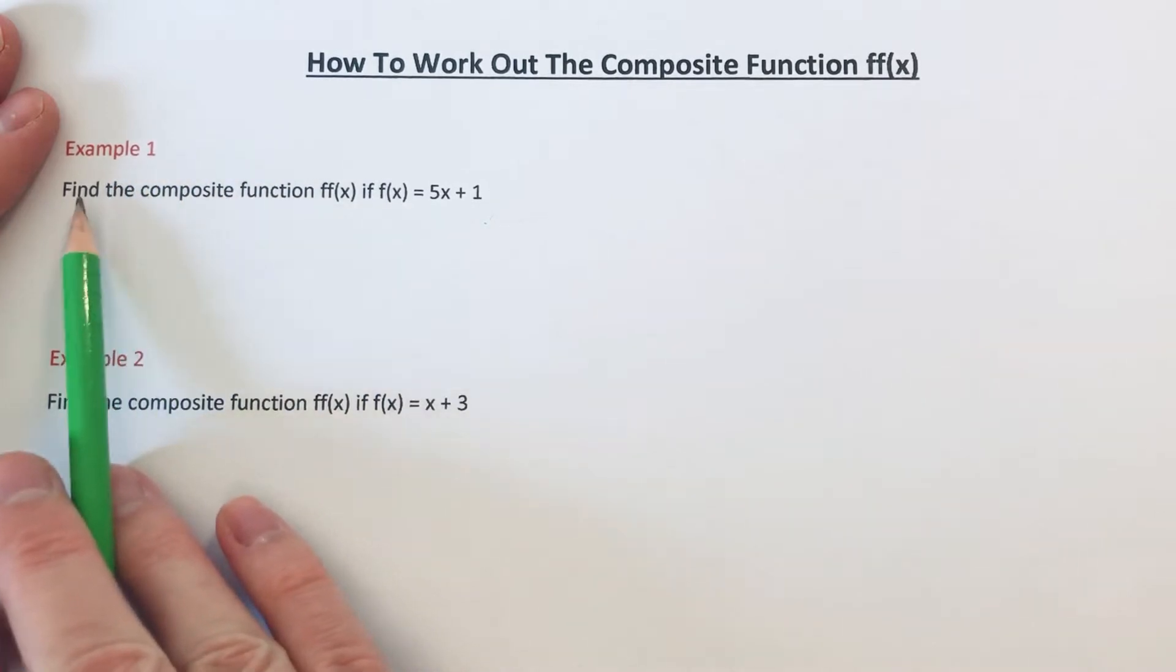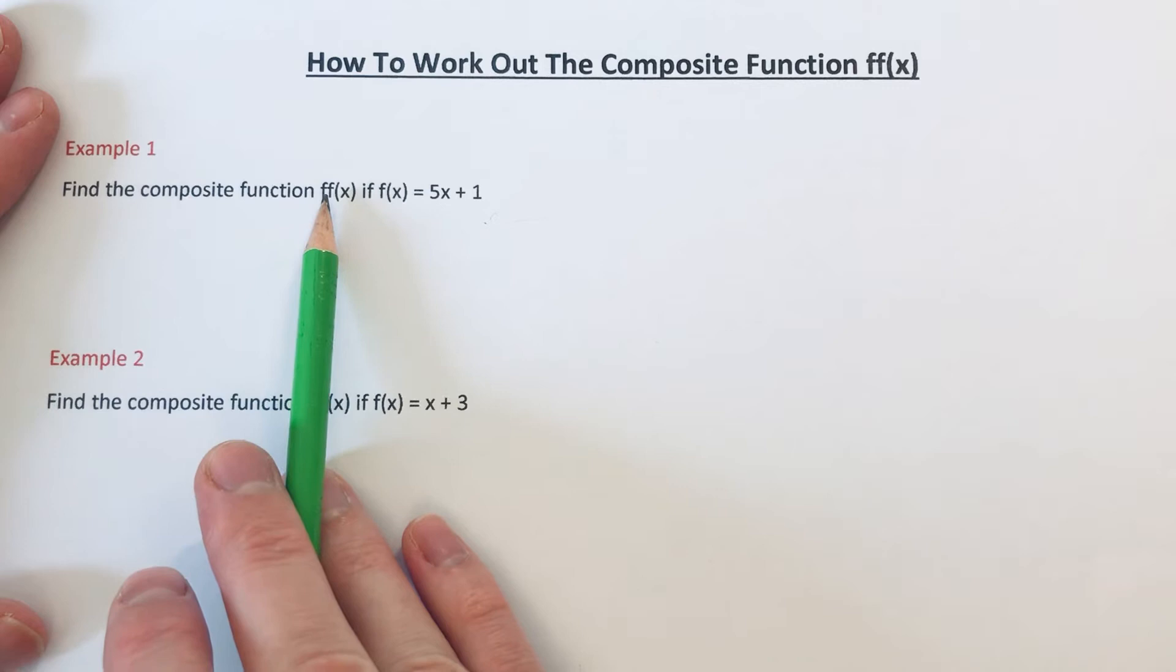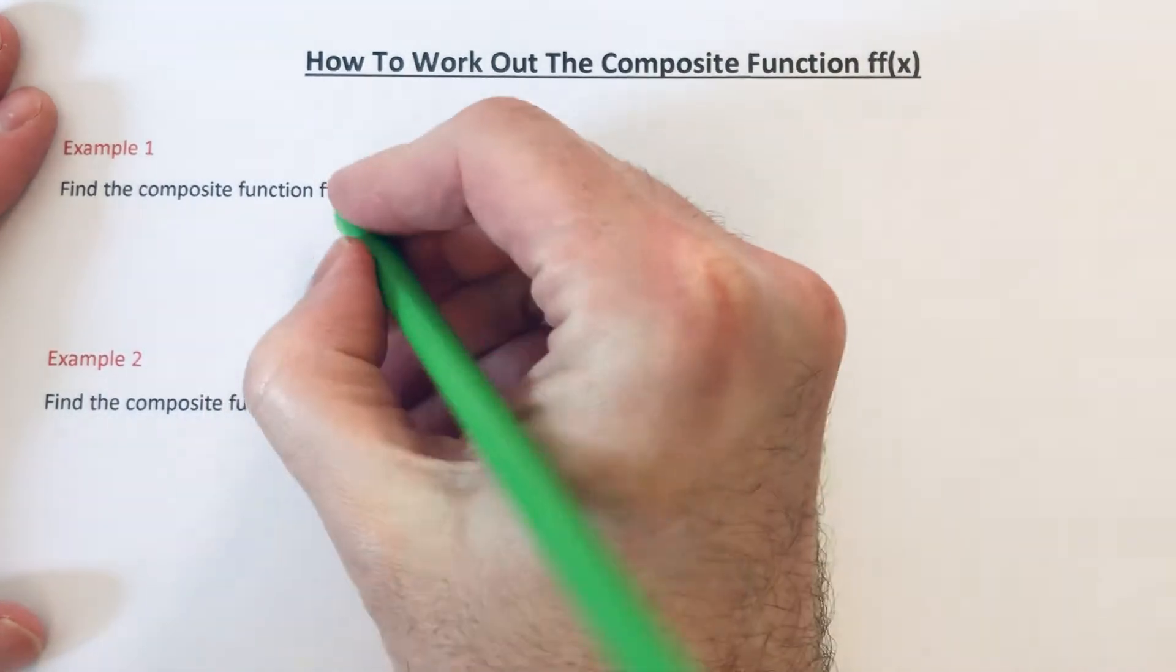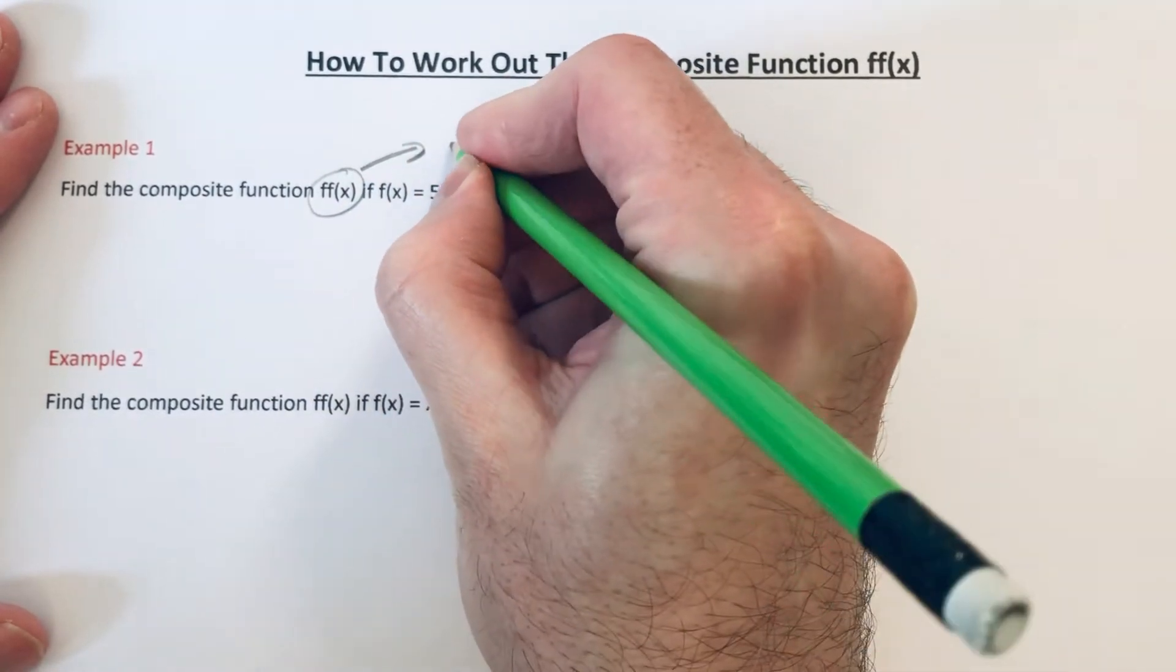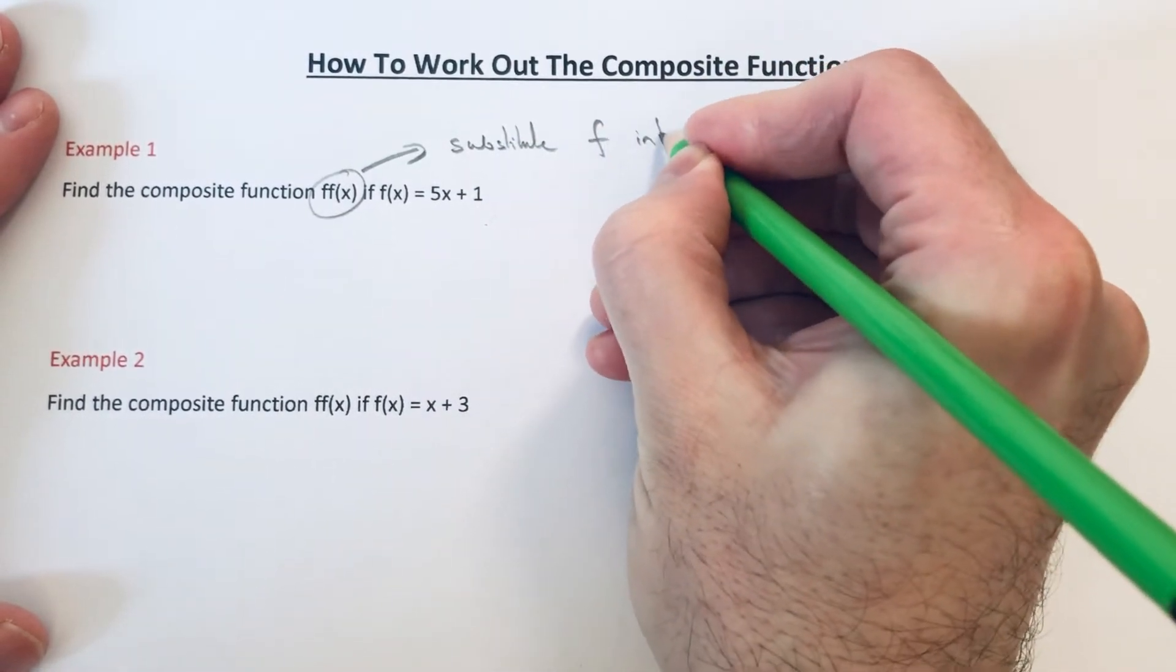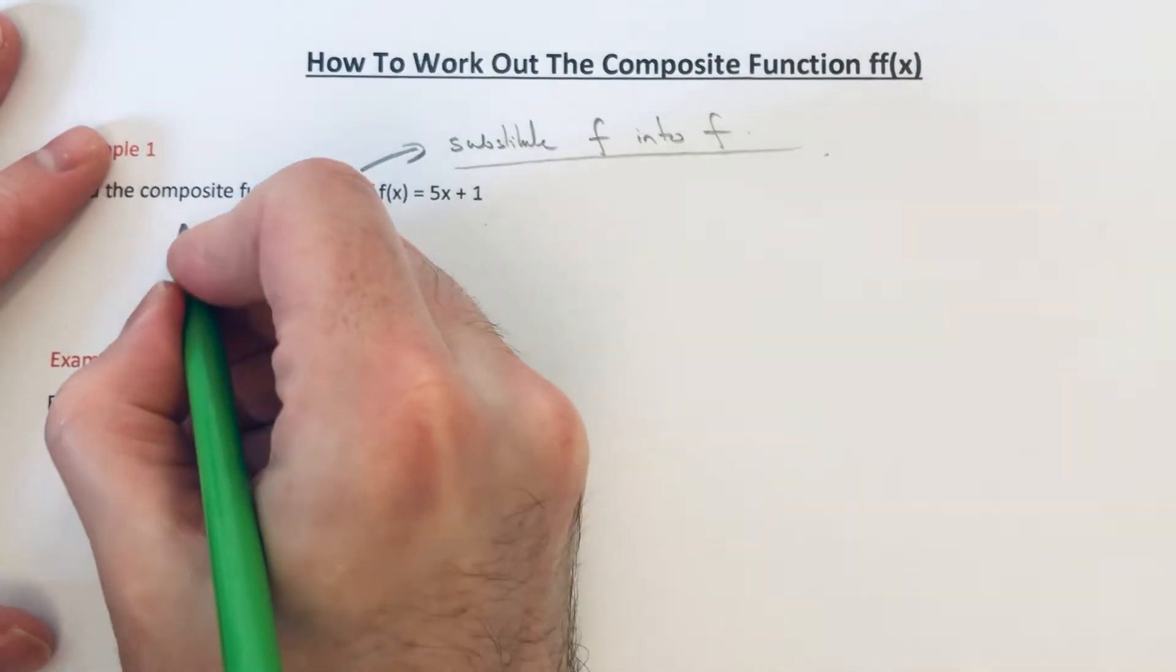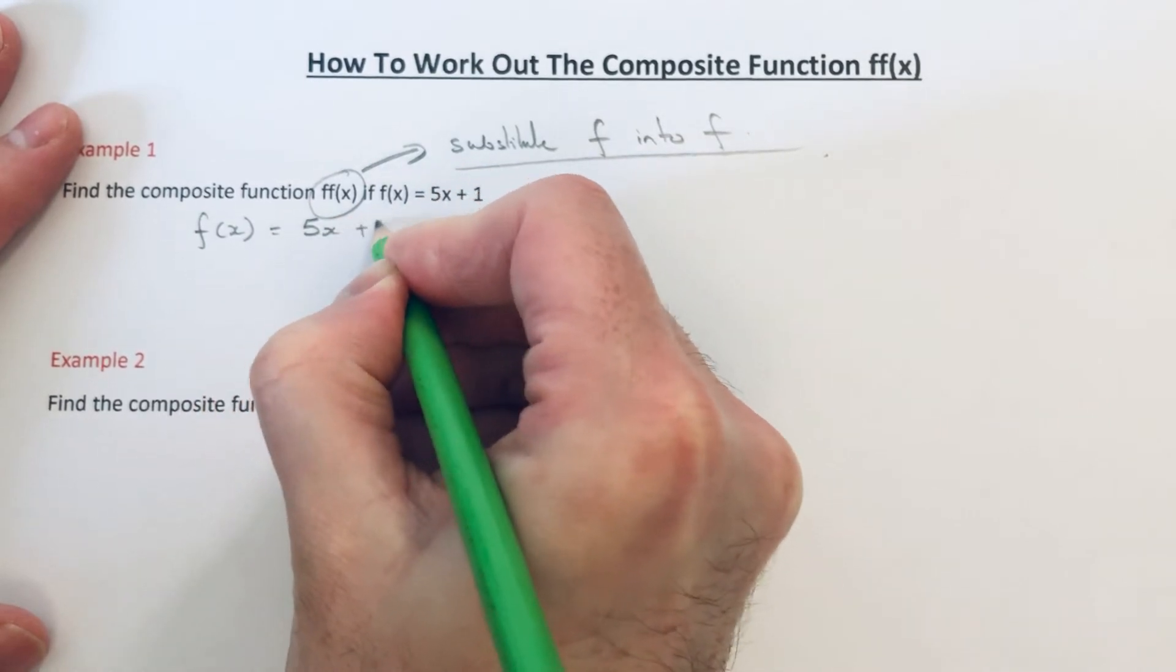So let's go straight into the two examples here. We've got to find the composite function ff of x if f of x is equal to 5x plus 1. So what this means here is we need to substitute f into f. Okay, so what I'm going to do is copy down the function f two times.